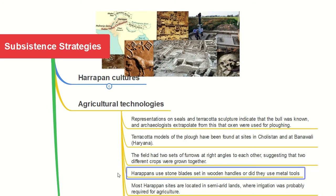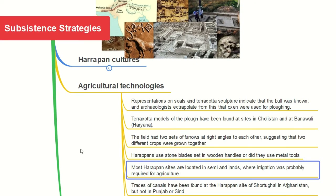The Harappans used stone blades, possibly set in a wooden handle, or they may have used metal tools. We don't know clearly how the stone blades were used, but we have evidence of stone blades that have been found. We interpret that they might have been used in wooden handles or with other metal tools.